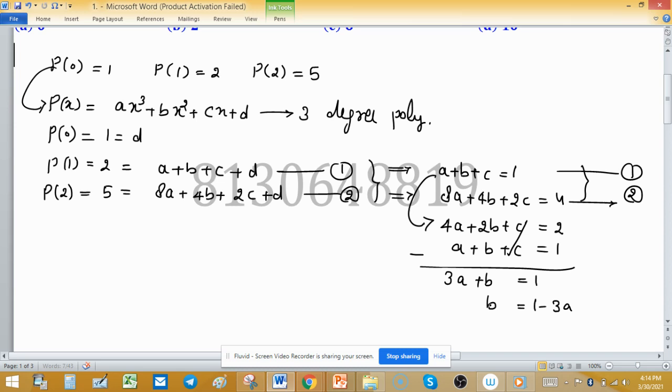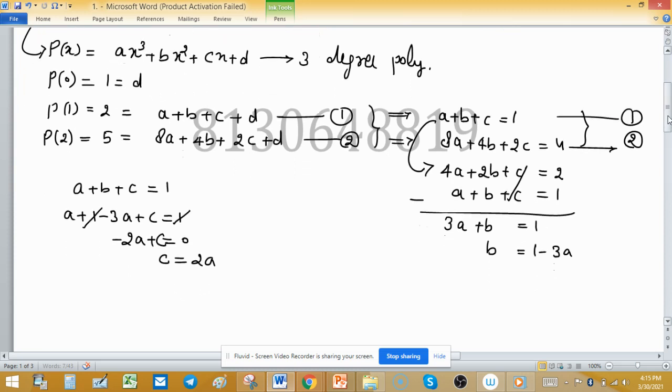Now use this value of B in equation 1, so A + B + C is 1. A + (1 - 3A) + C is 1, 1 cancels out by this one, so -2A + C is equal to 0. C equals 2A, means A, B, C all are in terms of A we have.